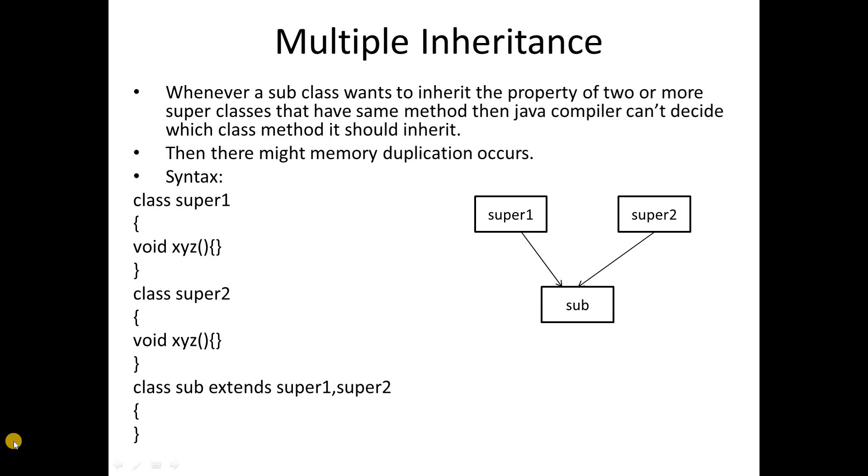First of all, see this diagram. In this diagram there are two super classes or two parent classes from which we derive only one subclass. This is called multiple inheritance. In short, in case of multiple inheritance, there is only one subclass and more than two super classes or more than two parent classes.